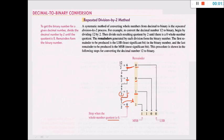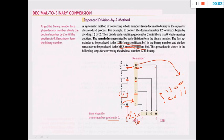Now, 12 in decimal — from where should I start to write the result? We write 1 1 0 0, not 0 0 1 1. We start from the least significant bit. The least significant bit is 2 to the power 0, then 2 to the power 1, 2 to the power 2, and 2 to the power 3. So 12 in decimal equals 1 1 0 0 in binary.